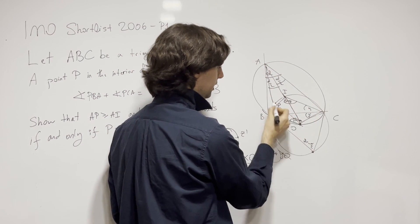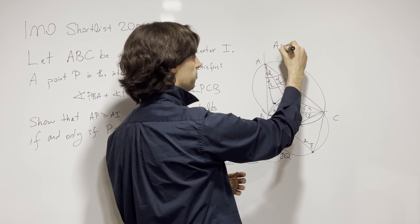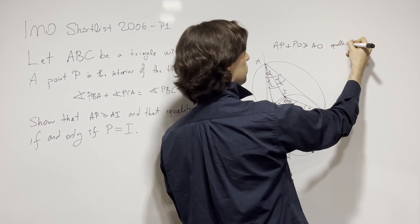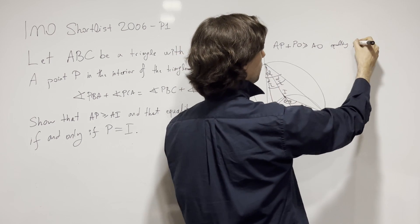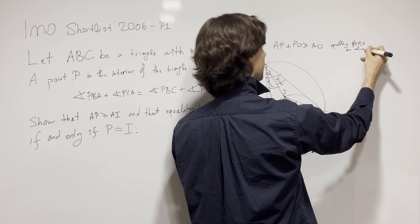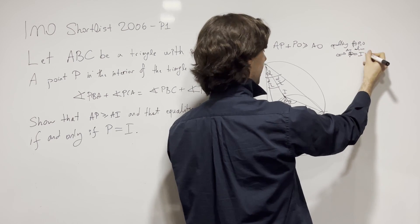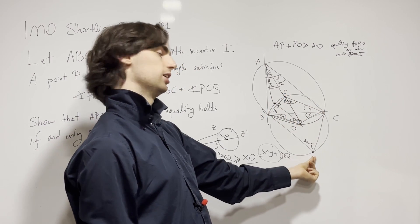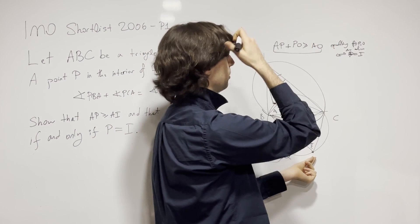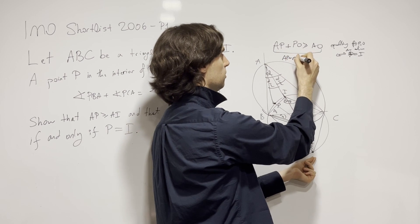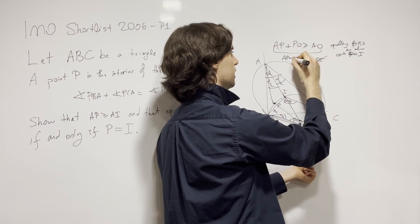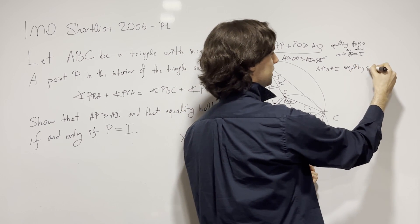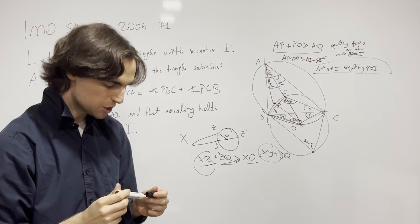Now we finish. Take any point P not equal to I. These form a triangle, so by the triangle inequality, AP + PO ≥ AO, with equality if and only if A, P, O are collinear — which happens if and only if P = I, since line AO meets the arc at exactly I on that side. Therefore AP + PO ≥ AI + OI. Since PO = OI (both radii), we get AP ≥ AI, with equality if and only if P = I.